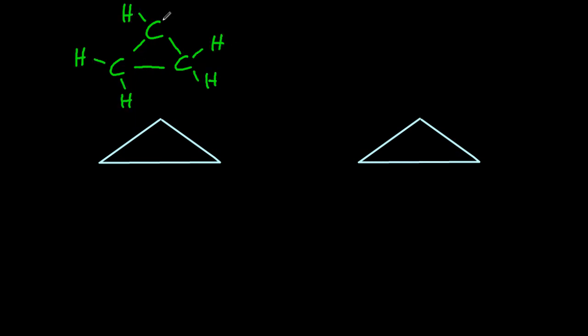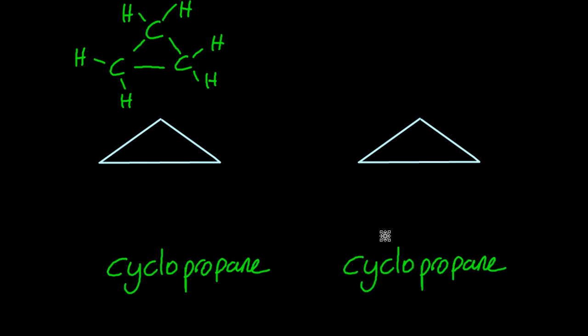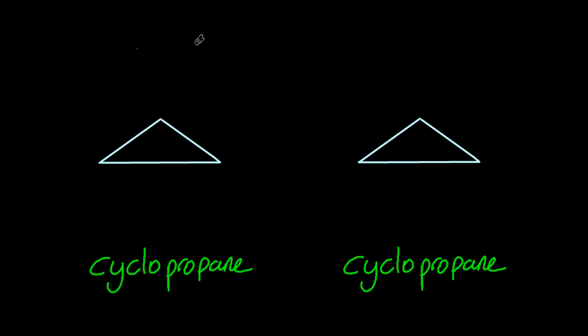So there's cyclopropane as a triangular form. The skeleton structures are those triangles there. And so we can have cis and trans with those too. The IB specifically makes sure that we want to know about the dichloro version, so I put a couple of chlorines on each one.